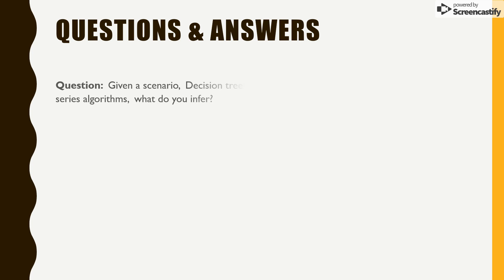Now, this is a scenario-based question. Given a scenario, your decision trees seem to be working better as compared to time series algorithm. What do you infer? This can be a hypothetical question. Decision trees are working better than time series algorithm. What do you detect out of it? One simple answer would be that the data set is non-linear. It doesn't have seasonality.